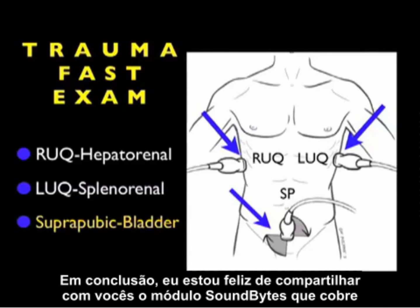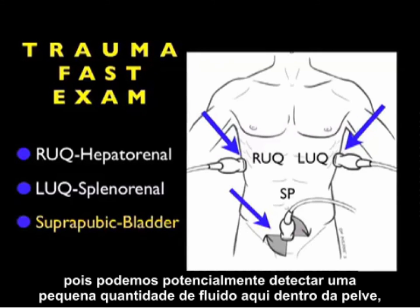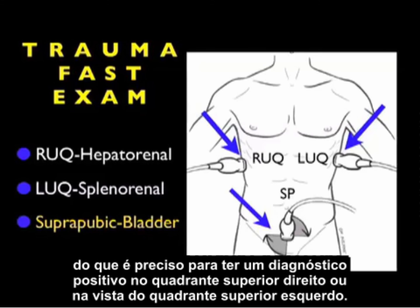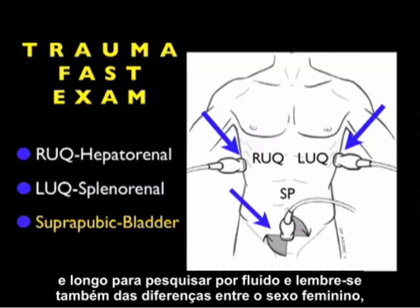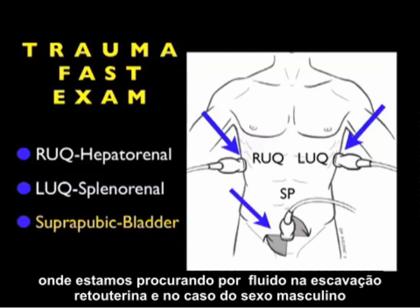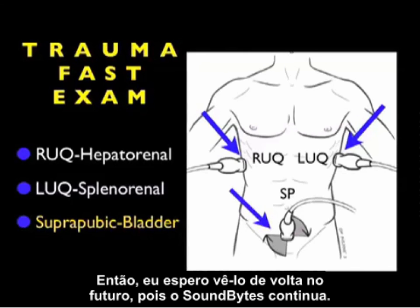In conclusion, I'm glad I could share with you this SoundBytes module covering the suprapubic view of the trauma FAST exam. This view is very important to add to the exam of your trauma patient as we can potentially detect a smaller amount of fluid here within the pelvis than it takes to make a positive right upper quadrant or left upper quadrant view. Remember this is a two-step exam — looking in both short and long axis configurations — and remember the differences between the female, where we're looking into the pelvic cul-de-sac for fluid, and the male, where we're looking into the retrovesical space for fluid. I hope to see you back in the future as SoundBytes continues.